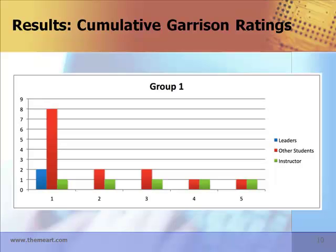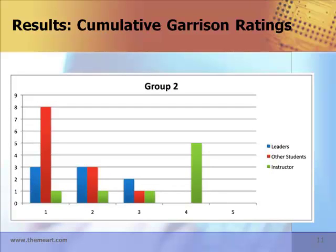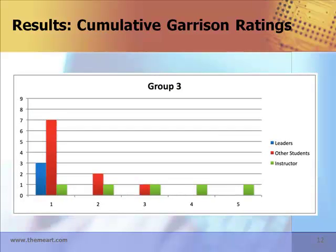The first analysis shown in this graph represents how the discussion postings fell into the various Garrison rating categories for Group 1. Most postings for the group leaders and students fell into Category 1, Social Other. Instructor ratings were evenly distributed across the five categories. Group 2 showed more postings for leaders in Levels 2 and 3, as well as slightly more Level 2 for students. The majority of instructor postings were in Category 4, Integration. There were no Level 5 postings for any of the three groups of participants. Group 3 had one instructional posting in each of the five categories, student postings were only in Category 1, and the majority of leader postings were in Category 1 with some in Categories 2 and 3.